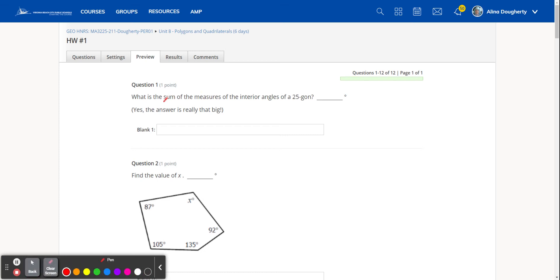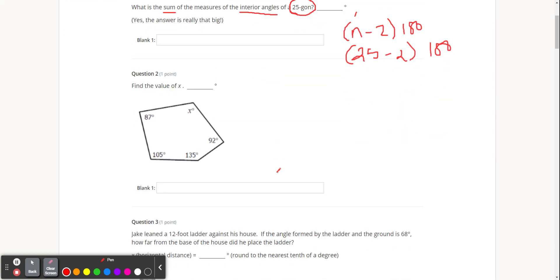So remember, we've got our chart, right? If I'm looking for the sum of the interior angles of a 25-gon, I'm going to use that n minus 2 times 180. The n is the 25. So 25 minus 2 times 180. Make sense?